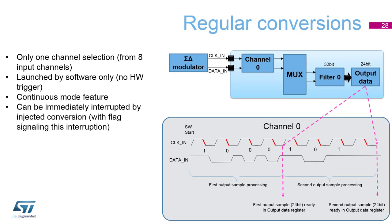In a second example, the DFSDM receives data from a single analog modulator. In continuous mode, it provides data non-stop, while the application can still request high-priority conversions on the injected channel group.